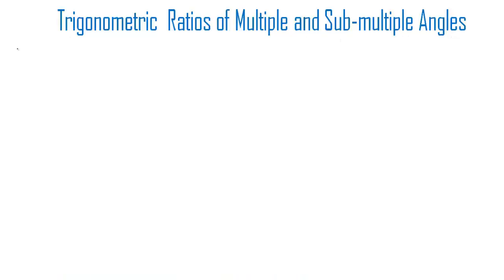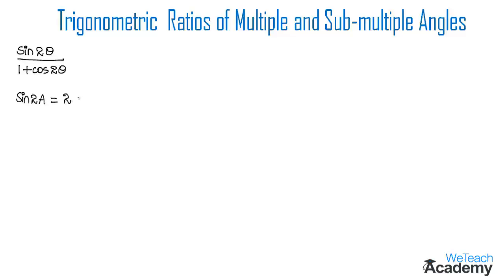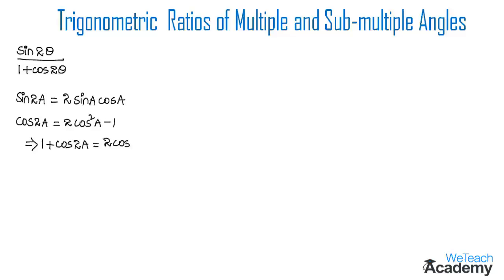The first example is sin2θ divided by (1 + cos2θ). By observing, the numerator sin2θ is in the form of the formula sin2a = 2 sin a cos a. For the denominator, 1 + cos2θ, we use the formula cos2a = 2cos²a − 1, which rearranges to 1 + cos2a = 2cos²a.